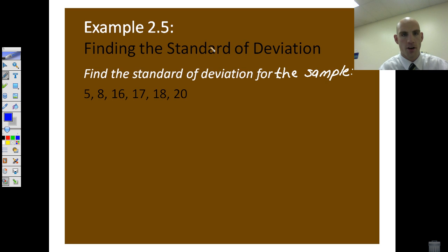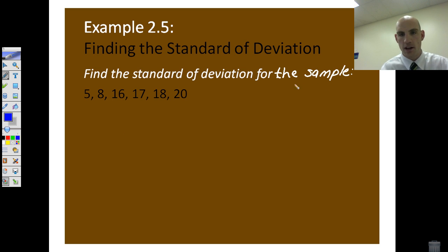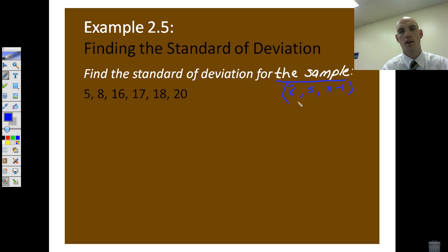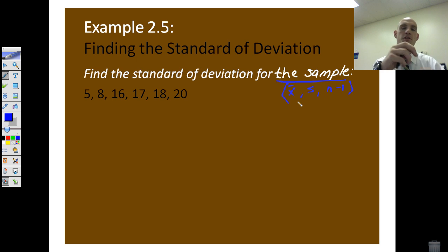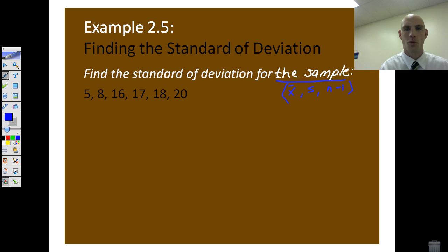Here's one for you — there are six numbers in this one, and note that it's a sample. So we're going to use x-bar, use s, and use n minus 1. Go ahead and calculate that one on your own, and we'll talk about it in class. That's standard deviation in a nutshell. We're talking about measures of dispersion — how far data is spread out. Stay tuned, we'll have more measures of dispersion coming. Thanks for watching.